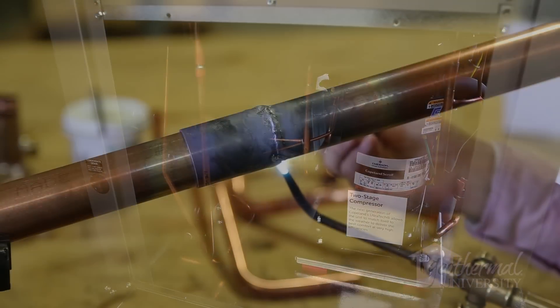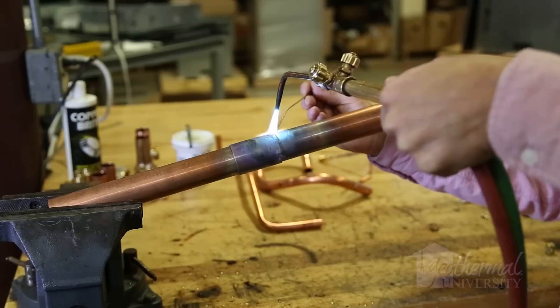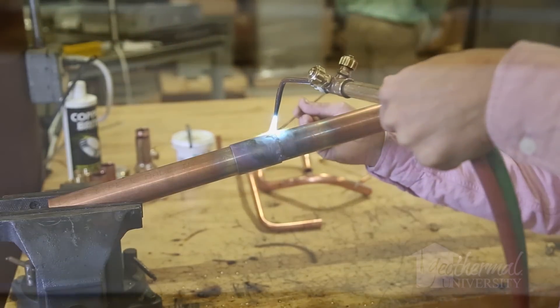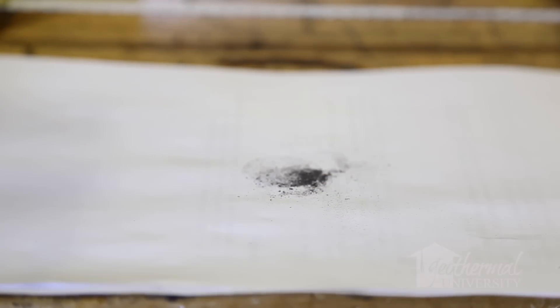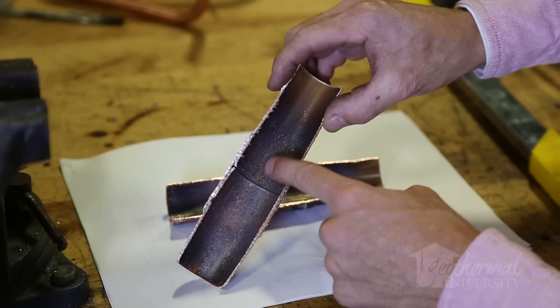In our first demonstration, we brazed an inch and a quarter suction line without using nitrogen. You noticed after the joint cooled, when we tapped the tubing, some of the internal scale broke loose. The inside revealed excessive scaling.